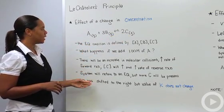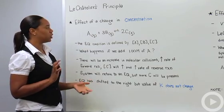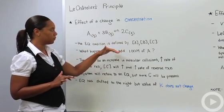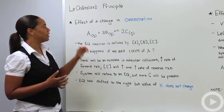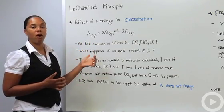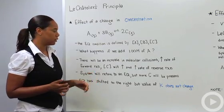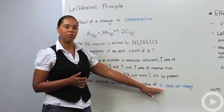So basically we say then that the equilibrium has shifted to the right, and that's where the new equilibrium position lies. That does not have effect, though, on our equilibrium constant, K. So K does not change. That's important to note here.